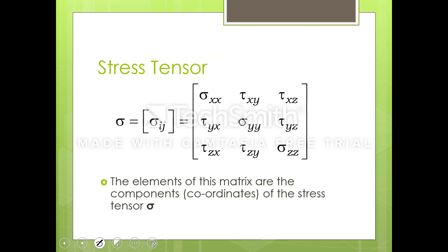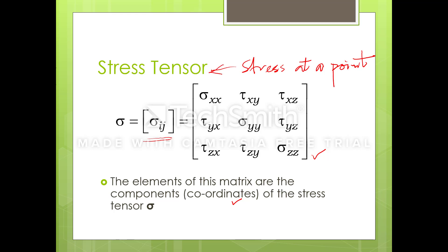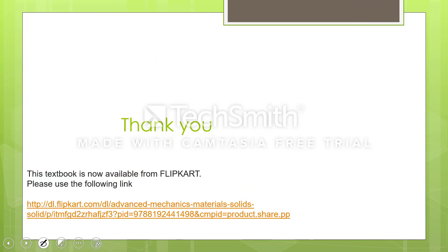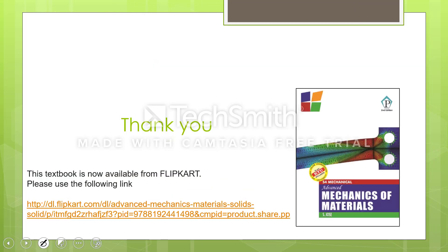This is another notation used for the stress tensor: sigma IJ, where I and J are one of the components in the stress tensor. The elements of this matrix are components or coordinates of the stress tensor. The stress tensor represents the state of stress completely. The state of stress at this point is completely defined by the stress tensor. With this textbook, you can explain the details.